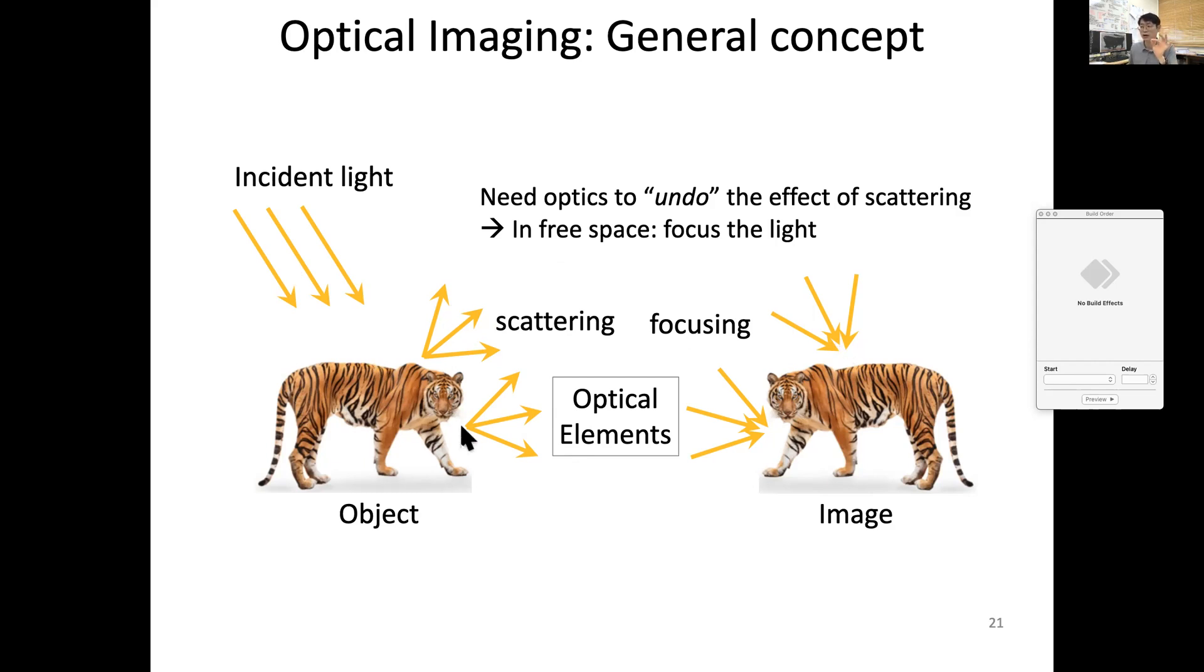This is point-to-point mapping in space. Let's say another point also focuses down to another corresponding point. In this case it's kind of flipped, but let's assume that doesn't really matter. Then we can have one-to-one mapping so that we can understand in imaging space what's actually seen in the object space. So this is the concept of imaging.